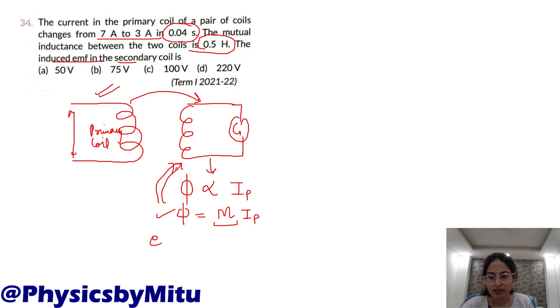Now what is the EMF formula? That is minus dφ/dt. Put the flux here. M is constant, so take it out: M·dI/dt. This is the formula for EMF.